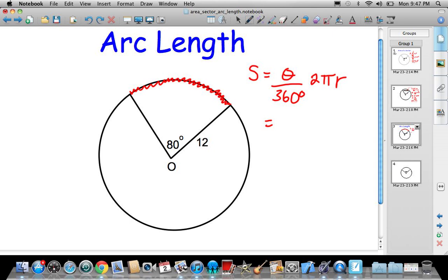We got 80 divided by 360, this is my angle divided by 360. Then I got 2 times pi, 3.14 times the radius 12. So it's just a matter of working that out. I get 80 divided by 360 which is 0.2 repeating, and then I'm going to times that by 2 times it by pi 3.14, and then I'm going to times it by 12.